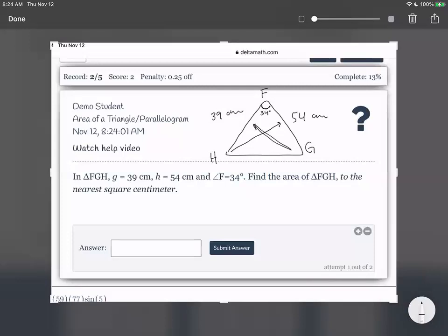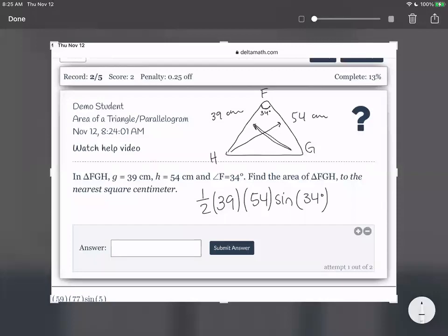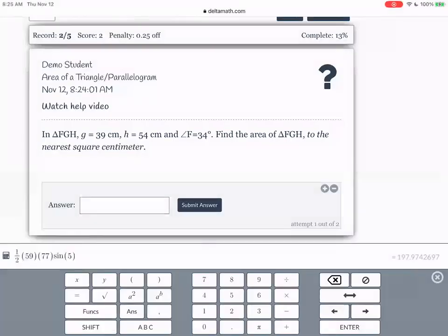And so when we calculate the area, we have one half, one of the sides, the other side, times sine of the angle in the middle. So just like that. And I'll give you guys a little bit of time to write.